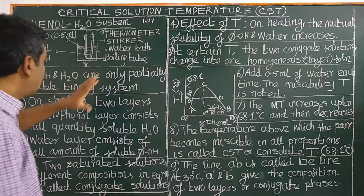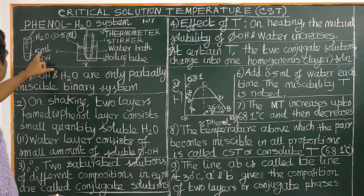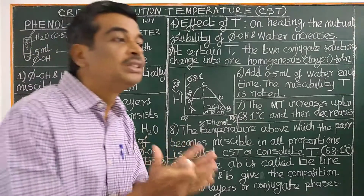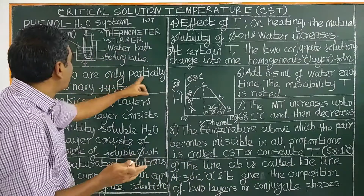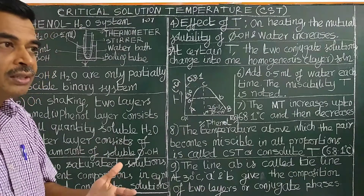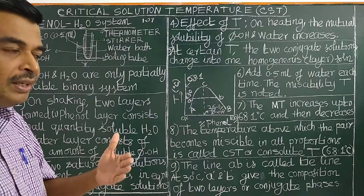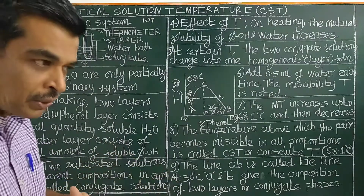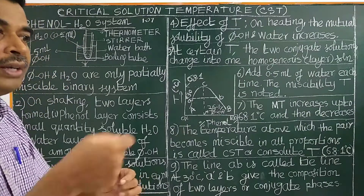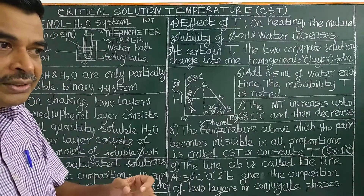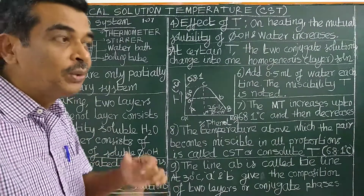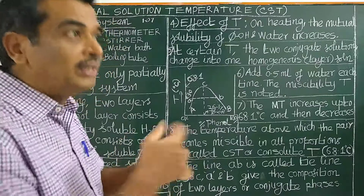It will form two layers. Now, suppose if you take ethanol and water, it will form a completely miscible system. What is solubility? What is miscibility? Solubility is dissolving a solid in a liquid. Miscibility is dissolving a liquid in a liquid.